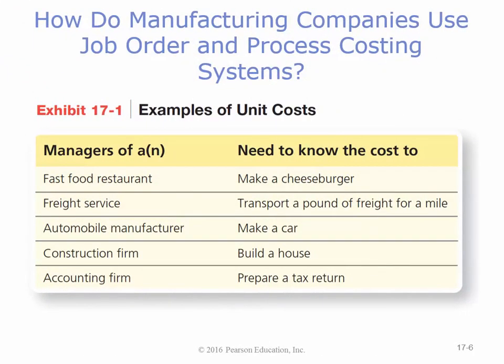All of these different companies have to know the cost of their products. McDonald's needs to know exactly how much it costs to make a cheeseburger, especially when they're putting stuff on the dollar menu — they're running really thin margins on those items.